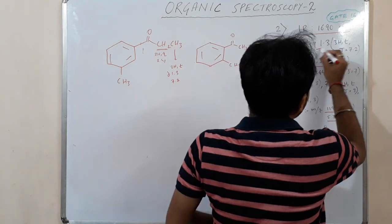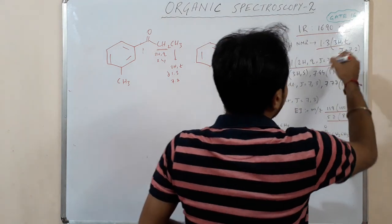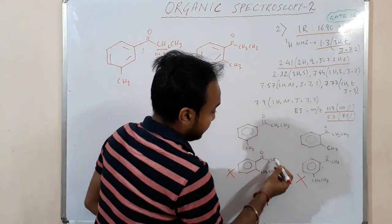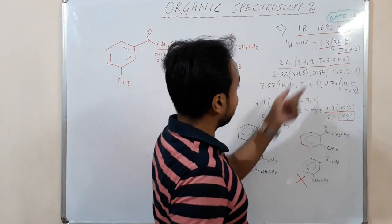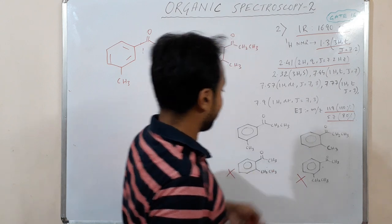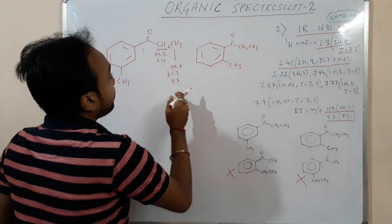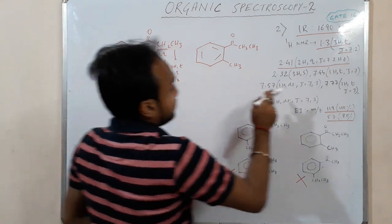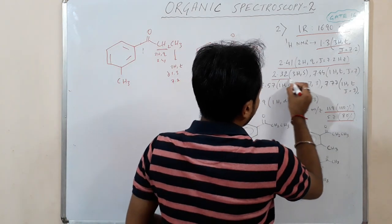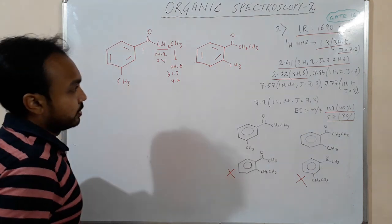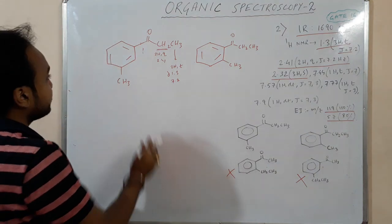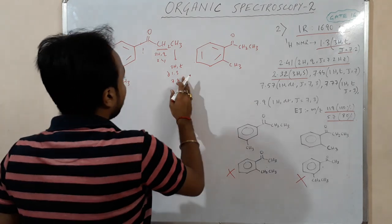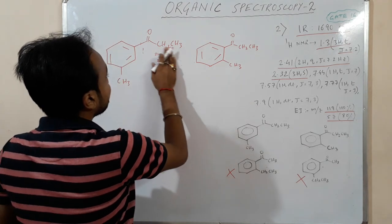These two hydrogens undergo vicinal coupling. So we have this type of ethyl structure. The 2.32, 3-hydrogen singlet is the methyl group on the ring. Now we need to determine the position of the methyl group on the benzene ring.